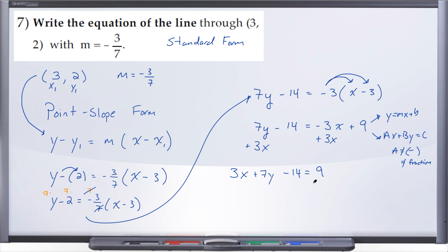And then lastly here we want to move our constant over, so we'll add 14 to both sides, and that's going to leave us with 3x plus 7y equals 23.